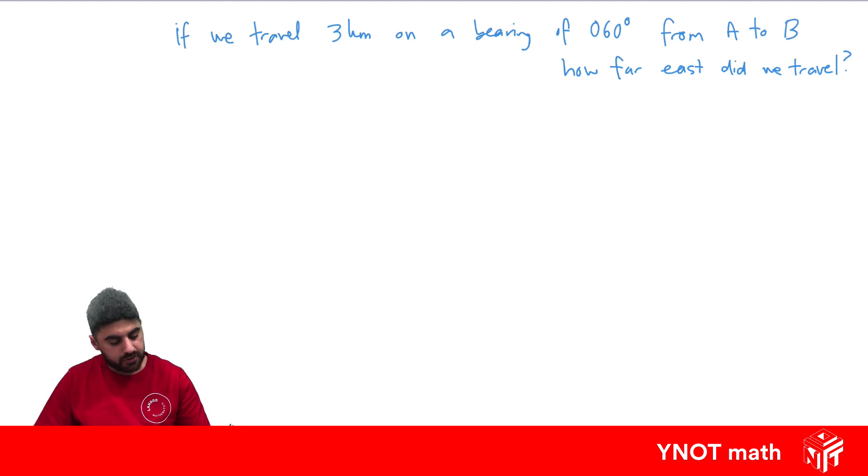So the first thing is to draw a diagram. Let's start with our point A and draw a compass going right through A, where this is north. If we're travelling on a bearing of 60 degrees, remember we have to measure from north clockwise until we get to 60 degrees. So about that is going to be 60 degrees, and we're travelling for 3 kilometers.